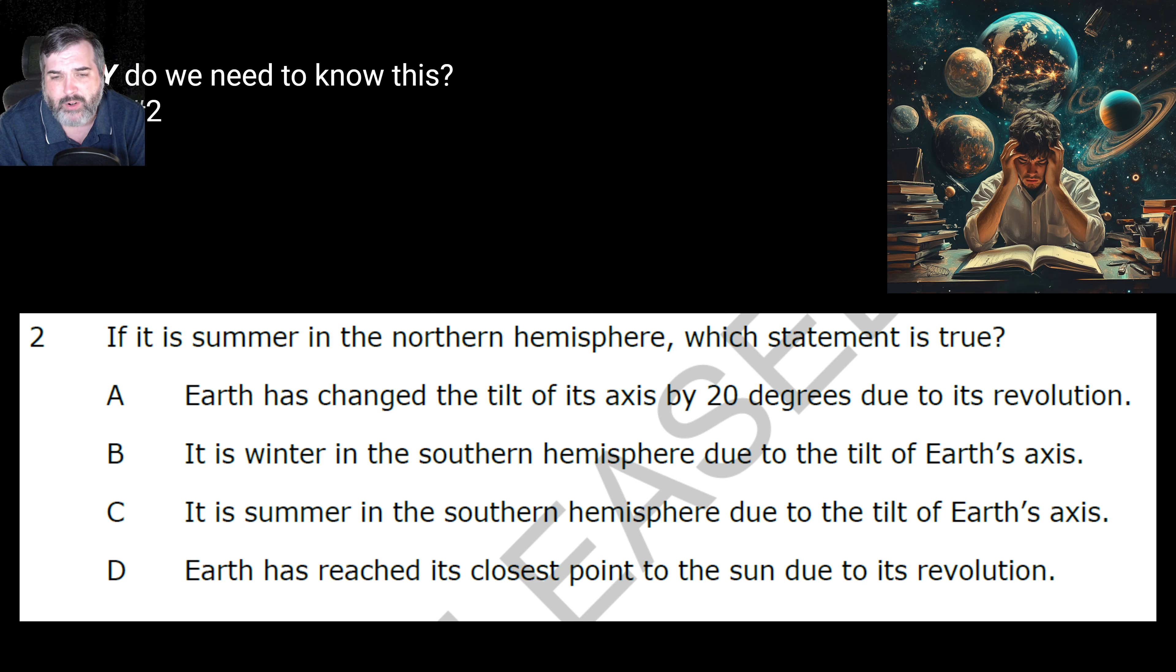So if it's summer in the northern hemisphere, which statement is true? A, Earth has changed the tilt of its axis by 20 degrees due to its revolution. B, it is winter in the southern hemisphere due to the tilt of Earth's axis. C, it is summer in the southern hemisphere due to the tilt of Earth's axis. Or D, Earth has reached its closest point to the sun due to its revolution. Give you five, four, three, two, one. Should be bravo. It is winter in the southern hemisphere due to the tilt of the Earth's axis.